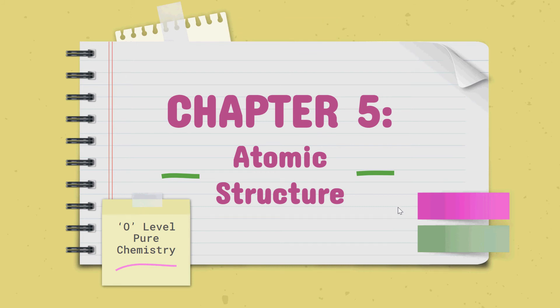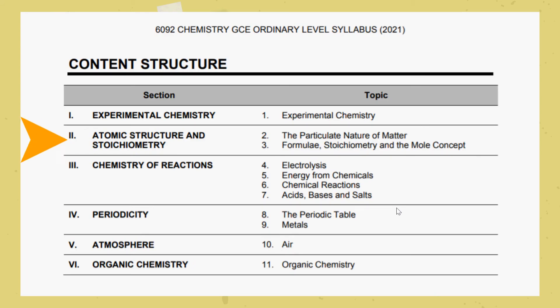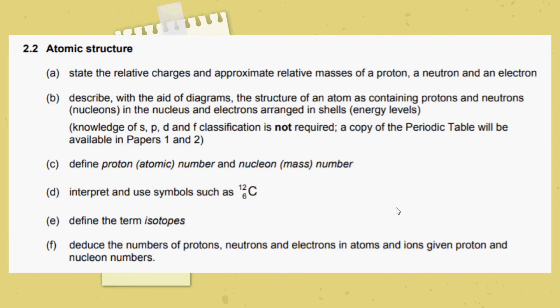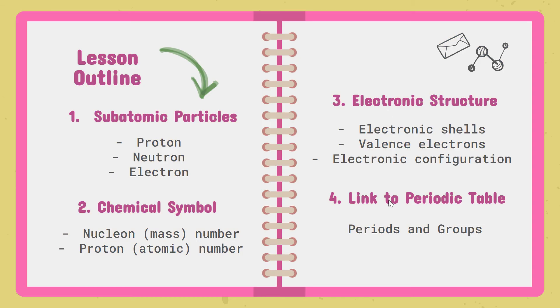Hello, today we will be learning about Chapter 5, Atomic Structure. We have now moved on to Section 2 of the 6092 SEAB Chemistry Syllabus. These are the learning outcomes for this section. The lesson outline is as follows: we will start with subatomic particles, followed by the chemical symbol, then electronic structure, and finally this chapter's link to the periodic table.